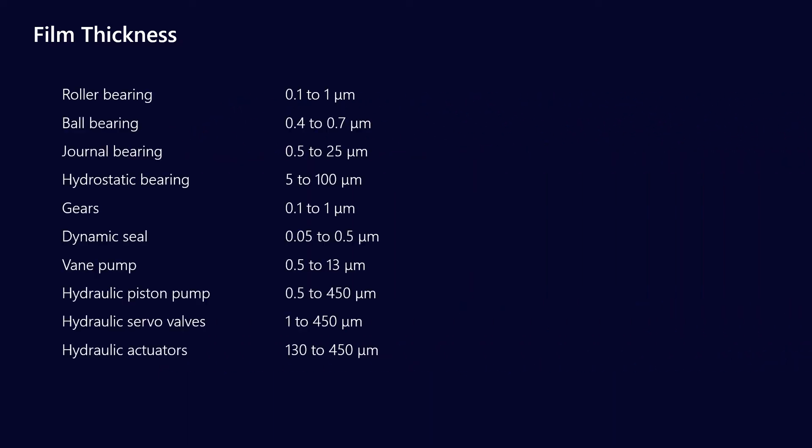So how much film thickness can we expect in different applications? Well, it varies. The numbers I'm putting up here vary between 0.1 and 450 microns. But most of the time when we talk about film thickness, we really mean in terms of bearings and gears, which means that in general we're talking about the 0.1 to 5 micron range.